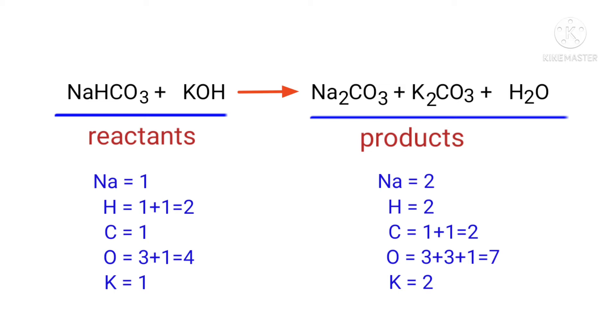The number of atoms are not balanced on both sides. To balance the chemical equation we need to make use of coefficients. A coefficient is a number that we place in front of a chemical formula.